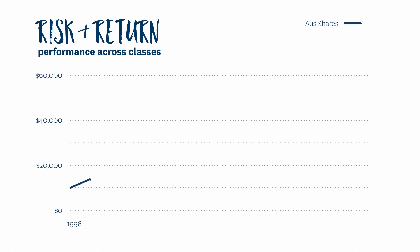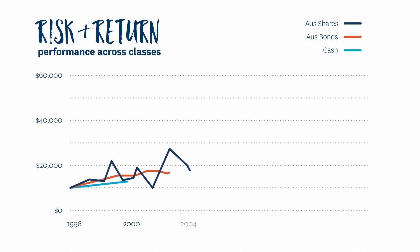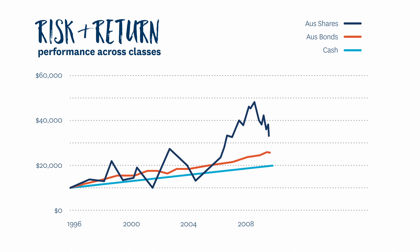We all want great returns year on year, but the reality is, if you take on more risk, you may get a bumpier ride on the way to the top. Investor psychology tells us that we instinctively react more to a drop in the value of our money than we do to receiving great returns.